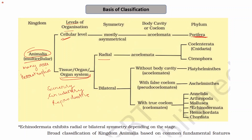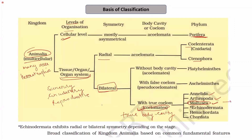We divided organisms on the basis of symmetry. Radial symmetry was seen in Coelenterata and Ctenophora. Now we are discussing organisms that show bilateral symmetry — specifically the coelomates that have a true body cavity. We have already discussed annelids and arthropods in the last lecture. Today's lecture focuses on the next phylum, Mollusca, covering its characteristics and the different classes under phylum Mollusca in kingdom Animalia.